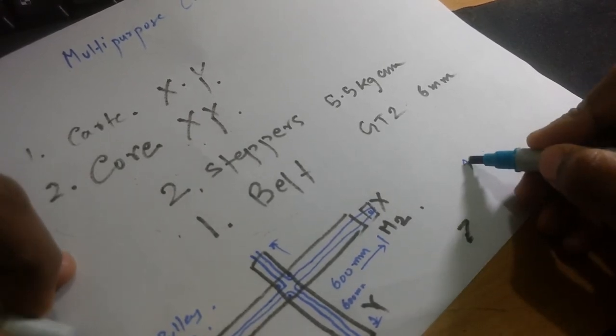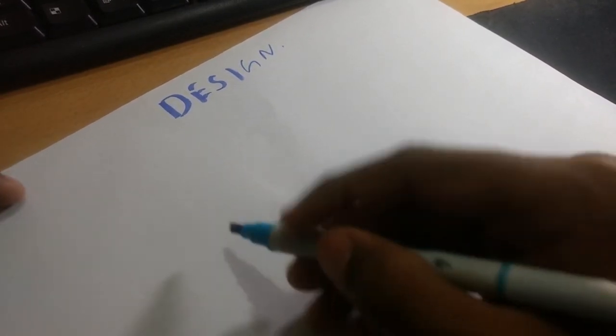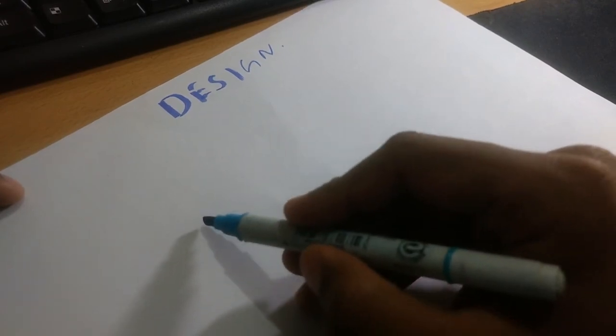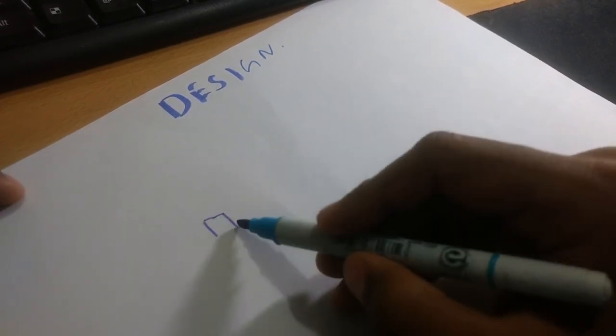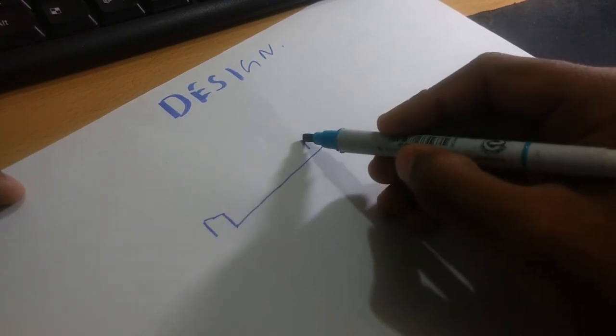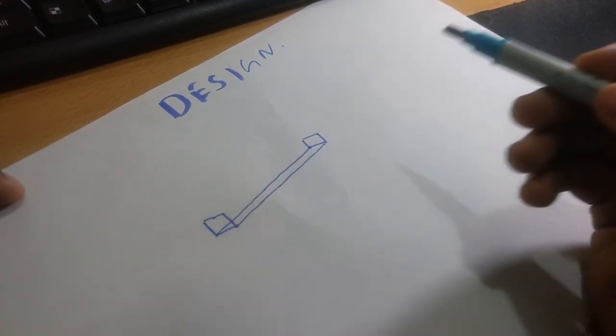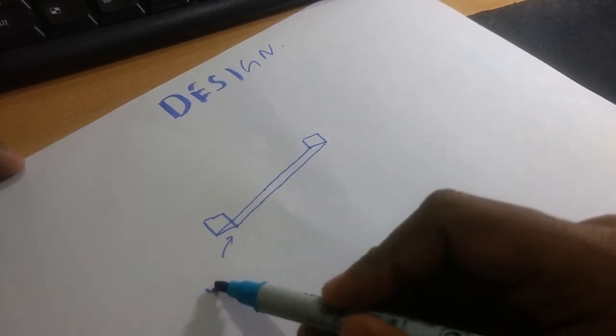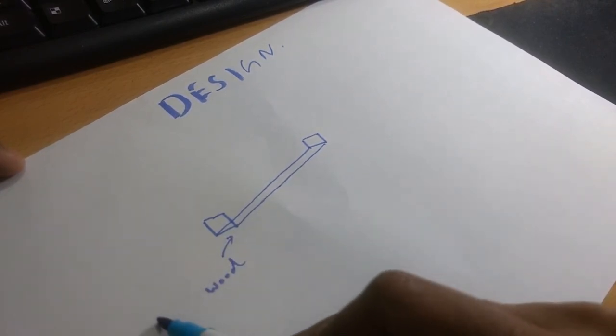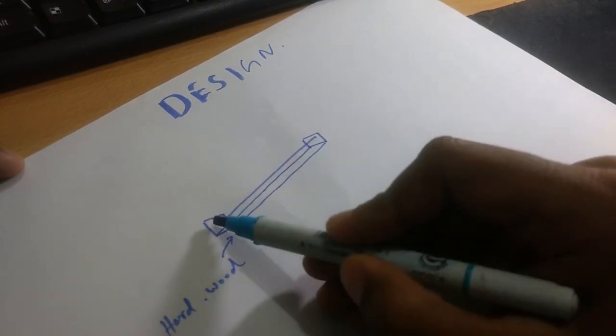Now let's talk about the design, how I am planning to make it. What I have thought: I will make a base of U-shaft and this base is preferably made of wood, like hardwood. And here will be two shafts, 8mm shafts. So this will be my X-axis.